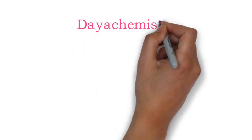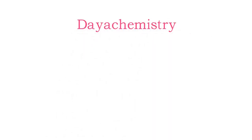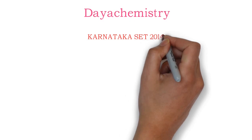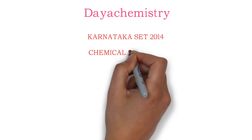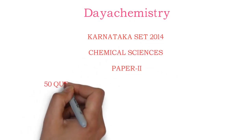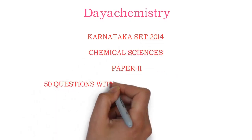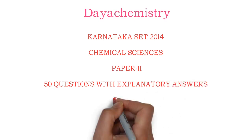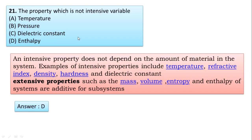Welcome to the Hyatt Chemistry YouTube channel. Karnataka SET 2014 Chemical Science Paper 2, 50 questions with explanatory answers, part 3. Next question 21: